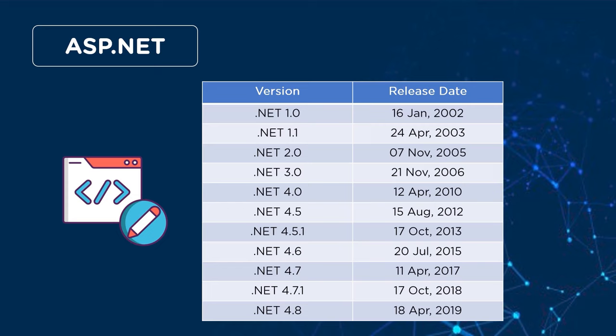After 2.0, .NET 3.0 was released on November 21st, 2006, with more features like Windows Presentation Foundation and Windows Workflow. Then on April 12th, 2010, .NET 4.0 was released, adding features of metadata and meta description for page class.